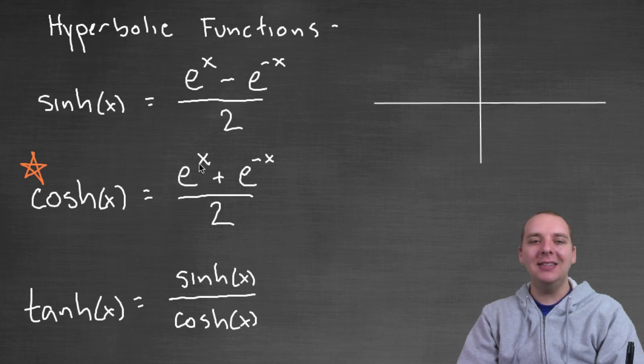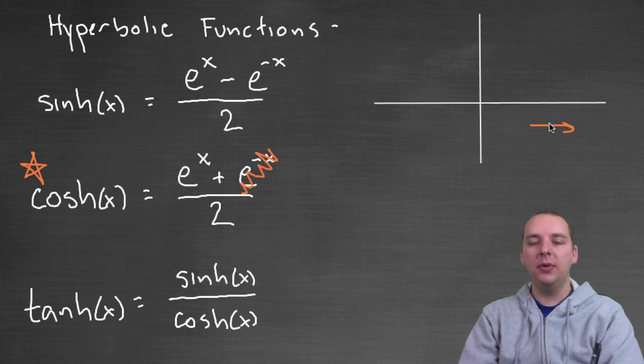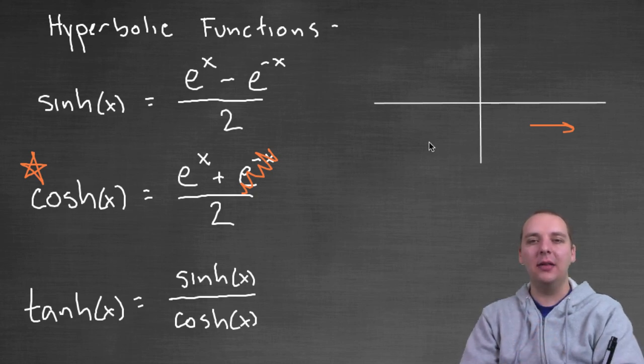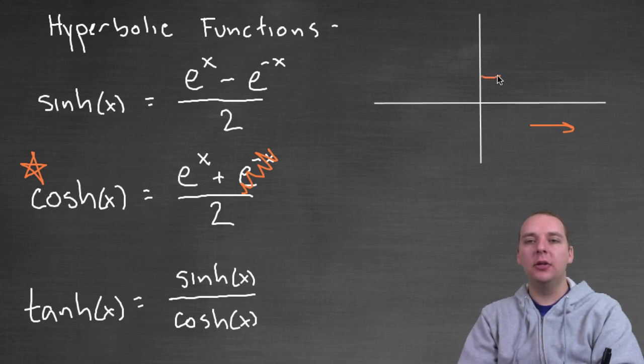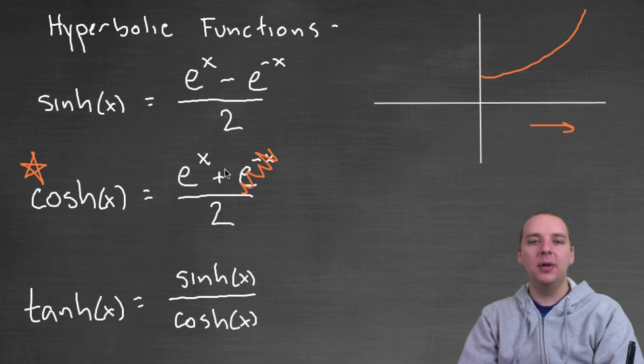think about what happens. As the x's get larger and larger, like out here, notice how this term is going to decay off, e to the negative x, that's going to basically dwindle to zero. And so if that becomes negligible, as the x's get really large, you really get e to the x over two. E to the x is exponential growth, and dividing by two is not going to do a whole lot. It might flatten it out a little bit, but not dramatically. It's still going to be exponential growth. And so the right hand side will look something roughly like e to the x, basically.